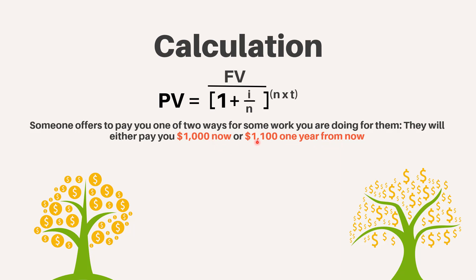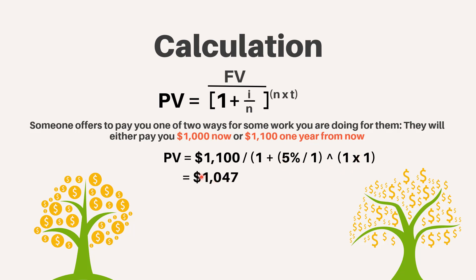How much money would you need in hand now in order to have $1,100 a year from now? The formula would be as follows: present value equals $1,100 divided by (1 plus 5% divided by 1) to the power 1 times 1. After calculation, we get $1,047. This shows that with an available return of 5% annually, you would need to receive $1,047 in the present to equal the future value of $1,100 to be received a year from now.